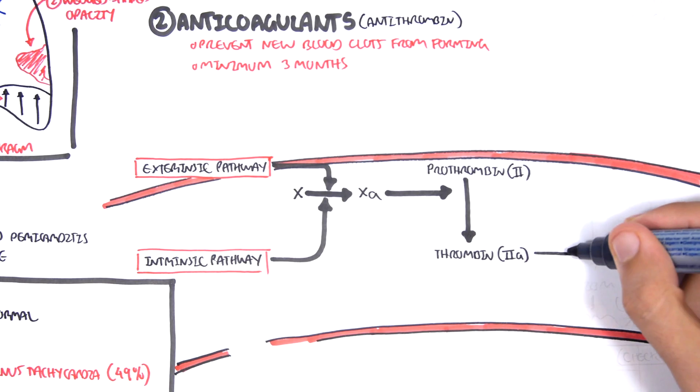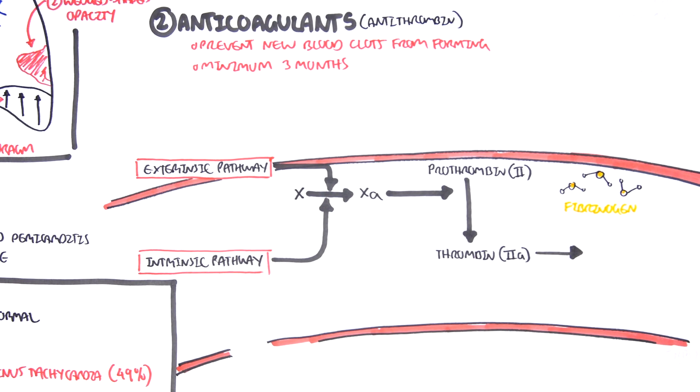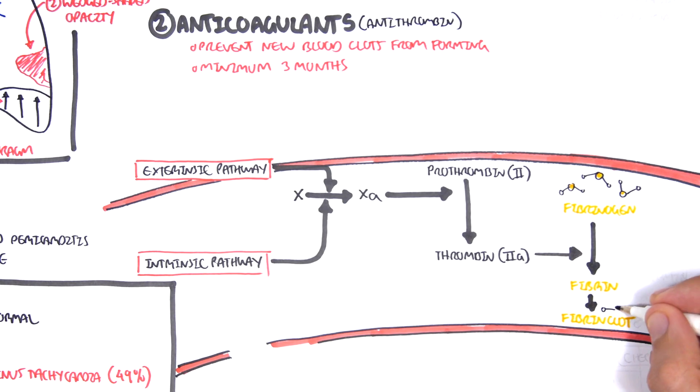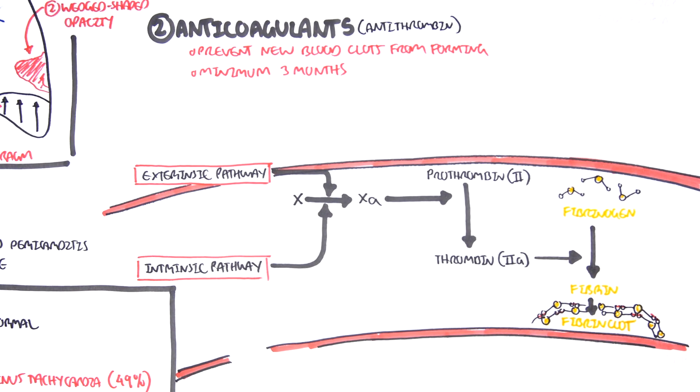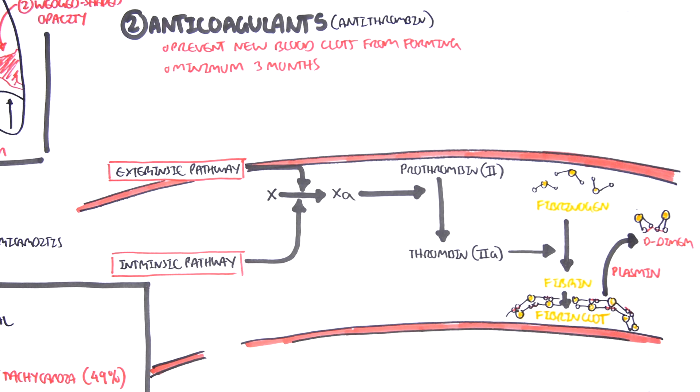Thrombin, clotting factor 2a, will then subsequently convert fibrinogen, and we've already talked about this, fibrinogen to fibrin and then the fibrin will form a meshwork of fibrin cross-linking. If you remember, in the presence of plasmin, it's broken down releasing the D-dimers and the D-dimers is used to basically measure coagulation activity in your blood.